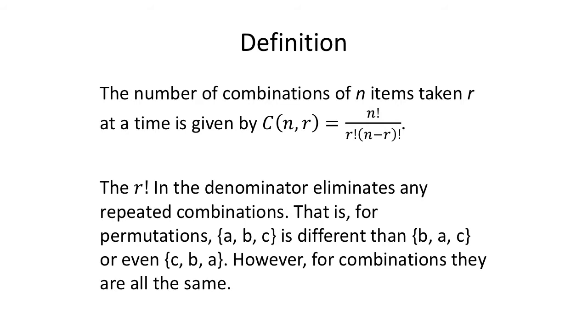So for permutations, A, B, and C is different than B, A, C. Order matters. Or C, B, A, that's different too. But for combinations, it doesn't matter. It's a committee. Abel, Bob, and Kane are all in the committee. It doesn't matter who was chosen first, second, or third. They're in a committee, so order doesn't matter. This r factorial will get rid of all the different ways that we could put those in a particular order. Here we go.